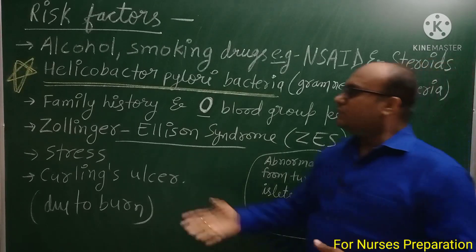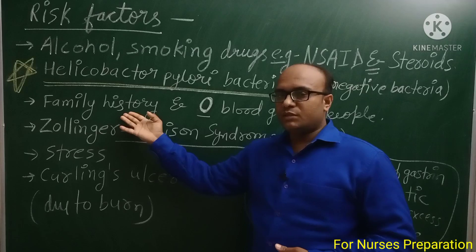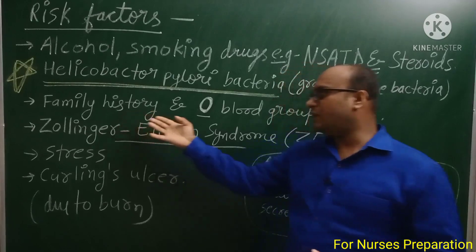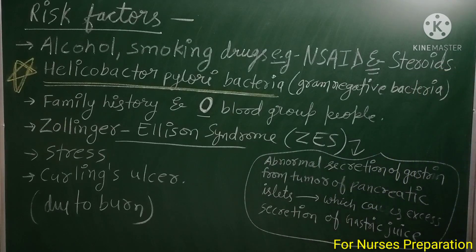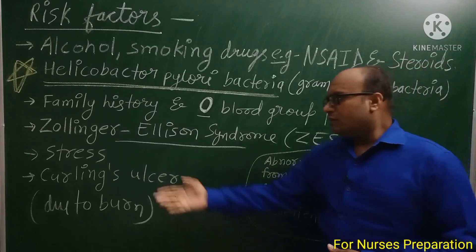उसके अलावा, यदि person में family history है Peptic Ulcer की, तो ये risk factor हो सकता है। और ऐसे लोग जिनका blood group O है, वो भी इस Peptic Ulcer के लिए susceptible माने जाते हैं।